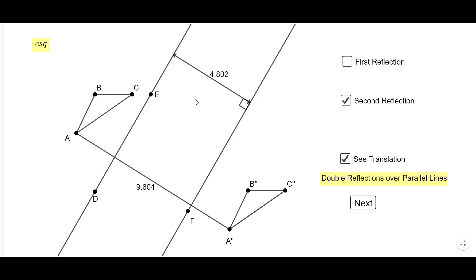Now you notice these two numbers are related, right? This number is twice 4.802 or vice-versa. If you want to say that, this number is half of the magnitude of this vector or the distance between A and A-second.